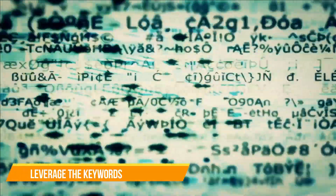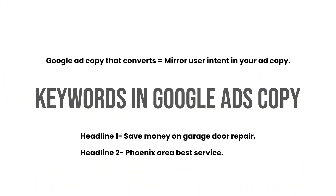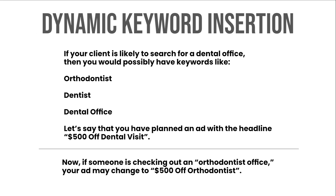2. Leverage the keywords. The first thing viewers notice about an ad is the headline. If your headline matches the search term, you will gain the attention of the searcher. Google ad copy that converts mirrors user intent in your ad copy. For example, if you offer garage door repairing services, then some good headlines for your ad will be: Headline 1 — Save money on garage door repair; Headline 2 — Phoenix area best service. Try not to repeat the keywords; instead, use the space in a manner that counts. Adding location works great for the user's local search intent. Adding pricing to an ad will make viewers know the actual price of the product beforehand — a better strategy to drive potential customers to your landing page.